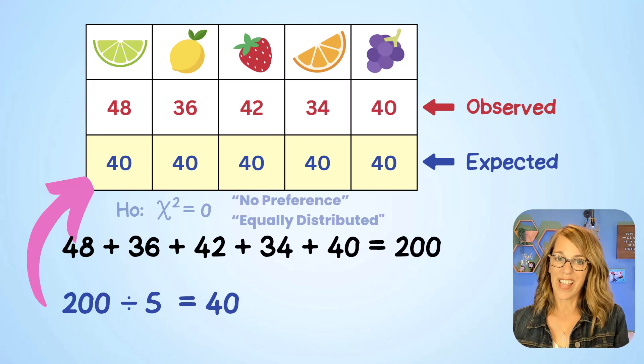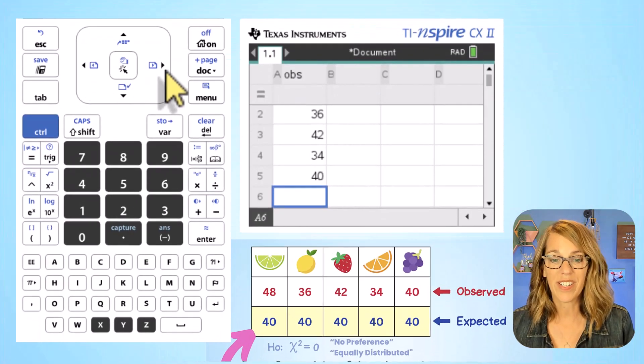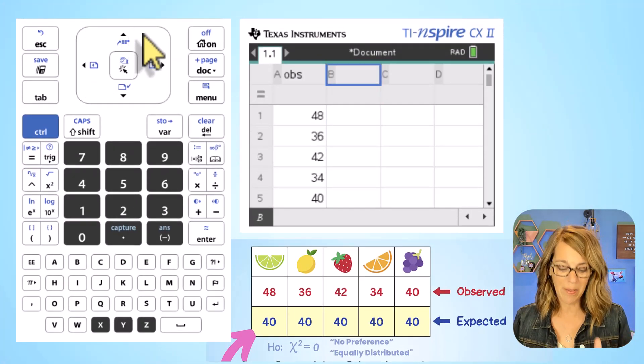Now that I've got these numbers, I can put them in the calculator too. I'm still in my spreadsheet document, so I'm just going to arrow over to the next column and then all the way up to that name.